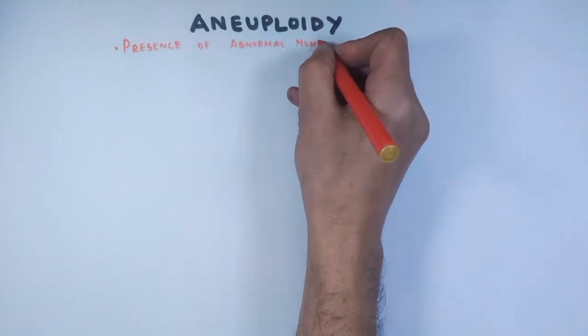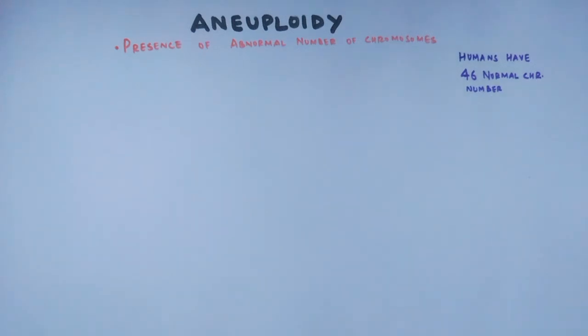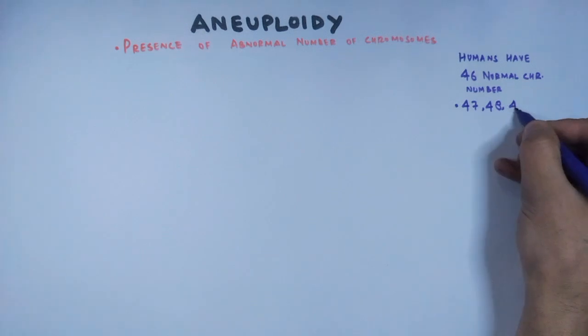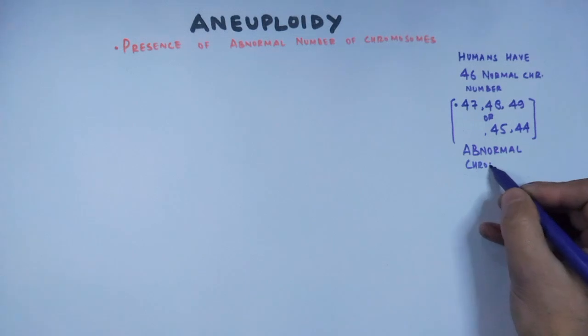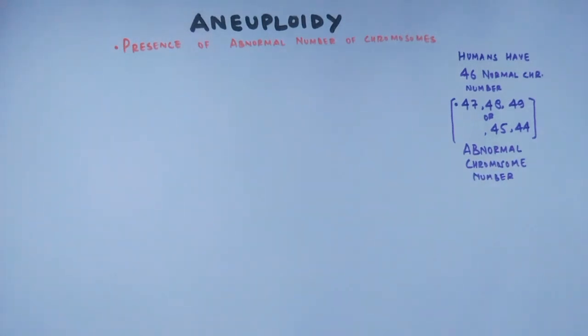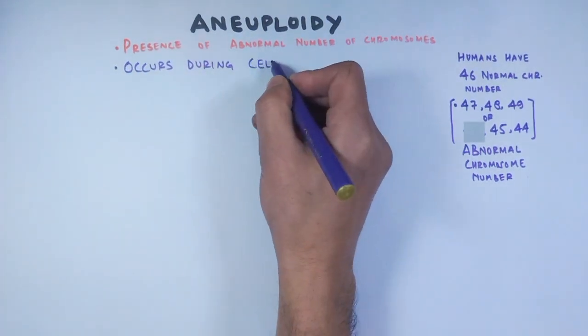In this video on genetics, we will be discussing aneuploidy, which refers to the presence of an abnormal number of chromosomes in the cell. In humans, the normal chromosome number is 46. The presence of a higher number like 47, 48, or 49, or a lower number like 45, 44, or 43, constitutes aneuploidy. The first question is: where does aneuploidy arise? Aneuploidy occurs during cell division.